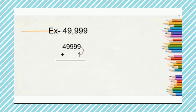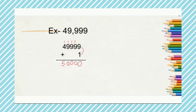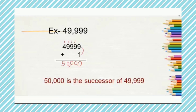Now let's look at successor. To find the successor, we add 1. For example, 49,999 plus 1: 9 plus 1 is 10, write 0 and carry 1. Again 9 plus 1 is 10, write 0 and carry 1. Again 9 plus 1 is 10, write 0 and carry 1. 4 plus 1 is 5. After 3 digits we put a comma to separate. So we get 50,000 as the successor of 49,999. So 50,000 is the successor of 49,999.